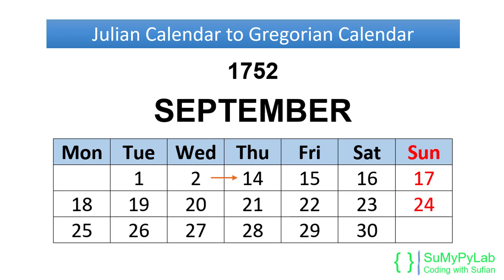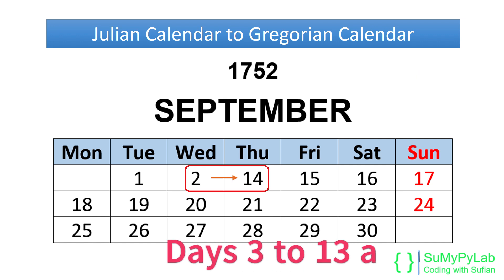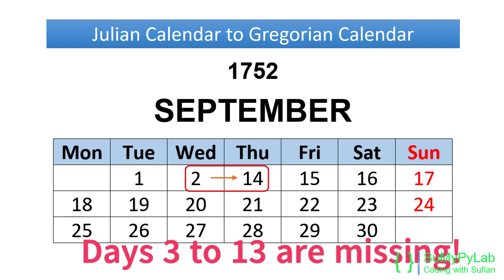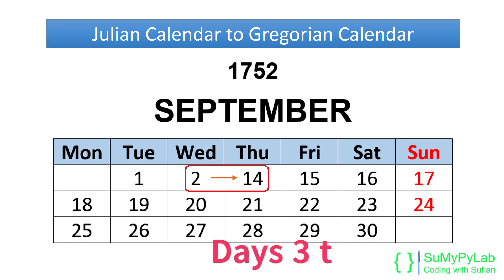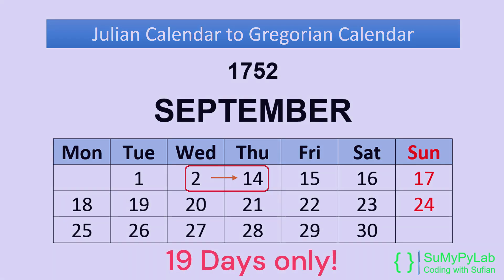The calendar on the screen is the actual calendar of the United Kingdom for September 1752. It is a milestone in the history of the Gregorian calendar. The days 3 to 13 are missing in this calendar — we have September 14 just after September 2. That is, the month is only 19 days long. Interesting, right?